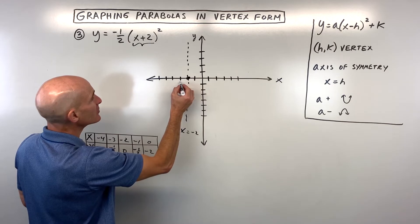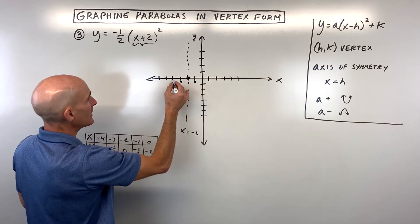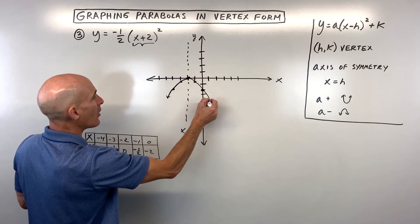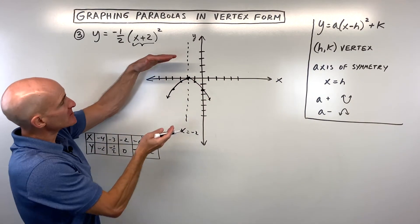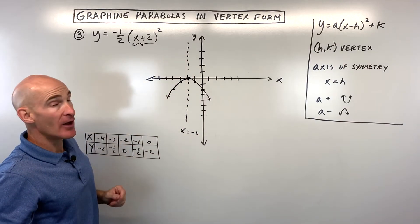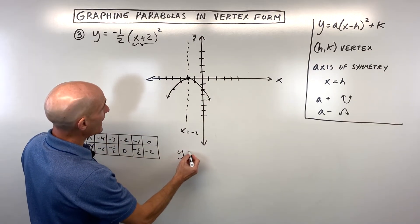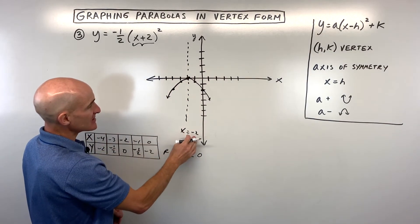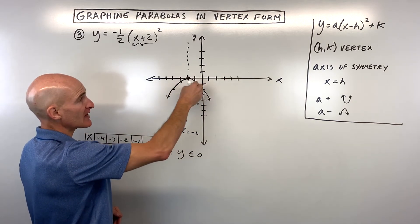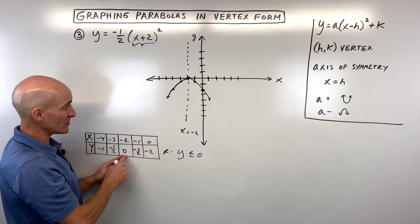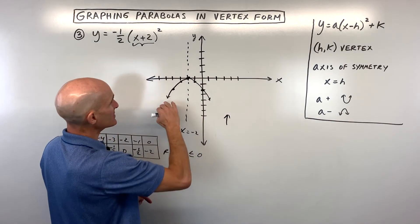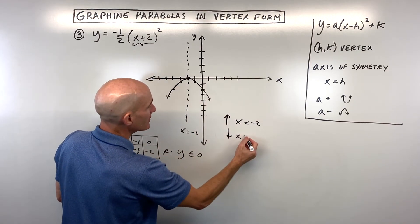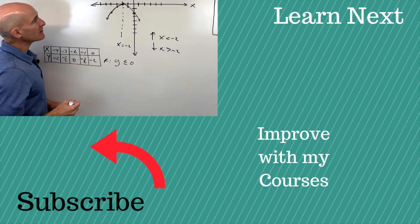Graphing these points — negative 3, negative one-half and negative 4, negative 2 — you can see this graph is opening down, which we knew because the a value is negative. The one-half is like a vertical shrink, making the graph wider. The domain is all real numbers. The range is y less than or equal to 0. The axis of symmetry is x equals negative 2. This has a maximum — it has a high point at 0, so the maximum is 0. The graph is increasing when x is less than negative 2 and decreasing when x is greater than negative 2.